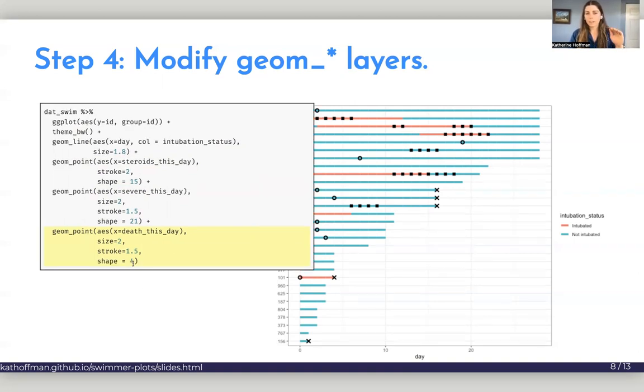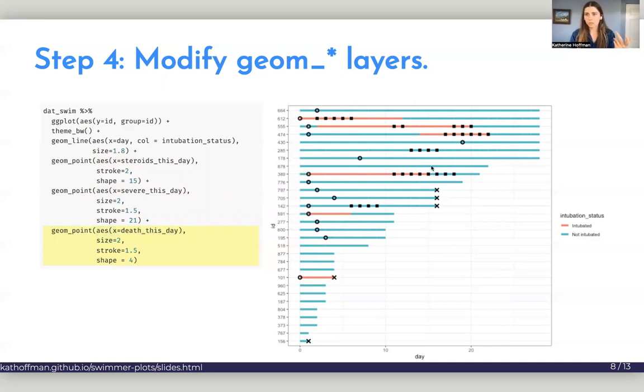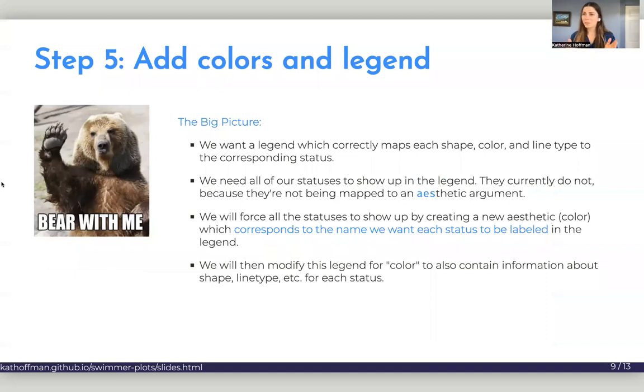And you'll notice that we also, since we added all of these characteristics outside of the aesthetics argument, we're not getting a legend that corresponds to any of these shapes right now or different stroke types. So when we add the colors, you're going to see that we're also going to do this in a way that gives us a legend for other symbols on the graph. So this is sort of the most important step, I would say, to be able to make nice swimmer plots in with ggplot, and that is understanding how you can add colors and the legend at the same time.